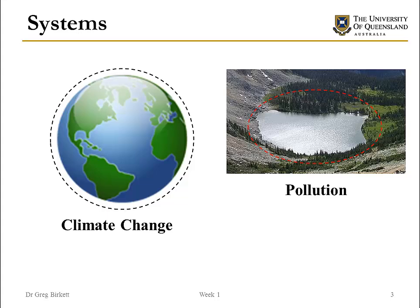So in this example, if you're wanting to consider climate change, then the whole world may be our system. We'd be looking at the energy coming in from the sun, and then looking at how that energy is retained, dissipated, and re-sent back into space. If we're interested in pollution, we may just be looking at a lake — what leeches off the hill nearby, what happens if we cut down the trees around the lake. So the system is just what you're interested in.